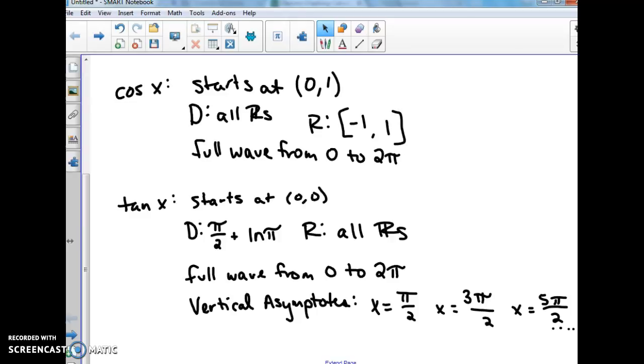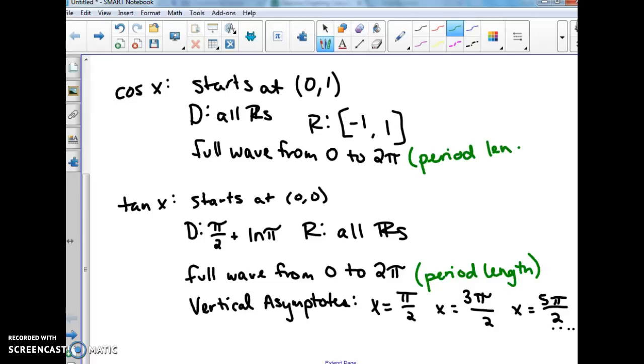So based on this, we have some information based on our graphs here. And they're just going to ask you, you know, find the domain and range, which we already kind of talked about. The full wave from 0 to 2π, this is what we call our period length. And this could change, and we'll talk more about that later on when we're looking at different graphs and how we can alter our graphs based on our numbers. But, like I said, these are all values just based on our unit circle, and this is just the graph of those.